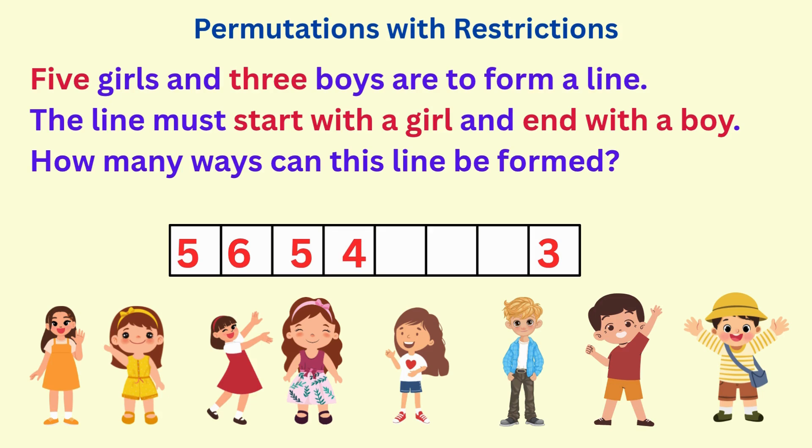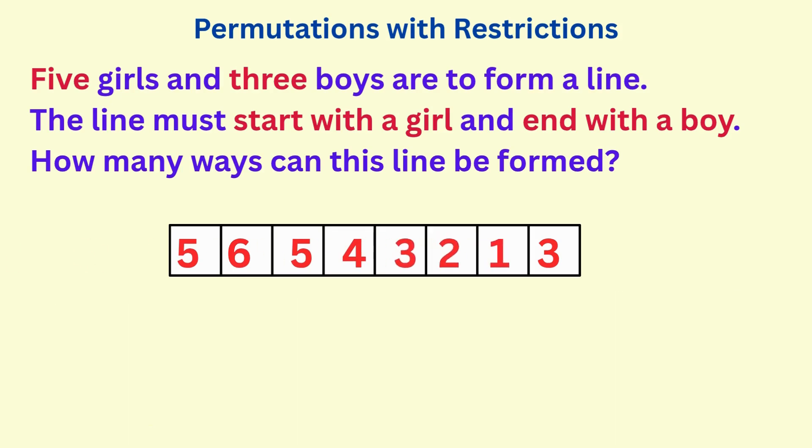And so on. So multiply the values in the box to get the number of ways this line can be formed, which is 10,800 ways.